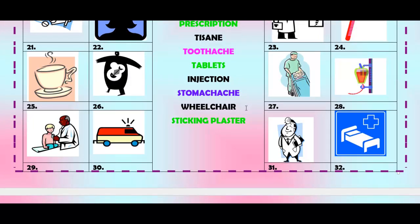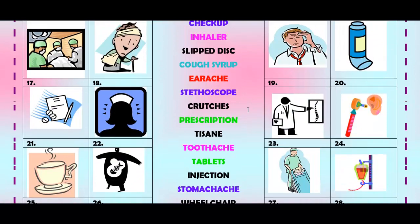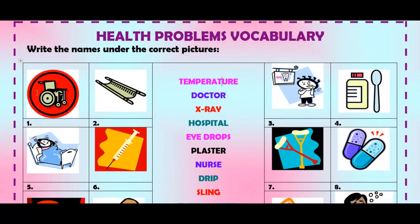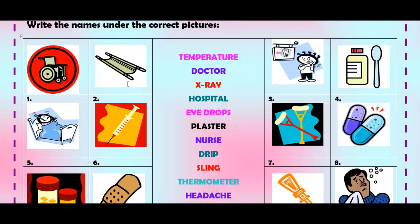Do you know what those mean? So let's start. Number one — you know this one — this is the wheelchair. Number two, this is a stretcher. Number three, when you feel pain in your teeth, you have a toothache.